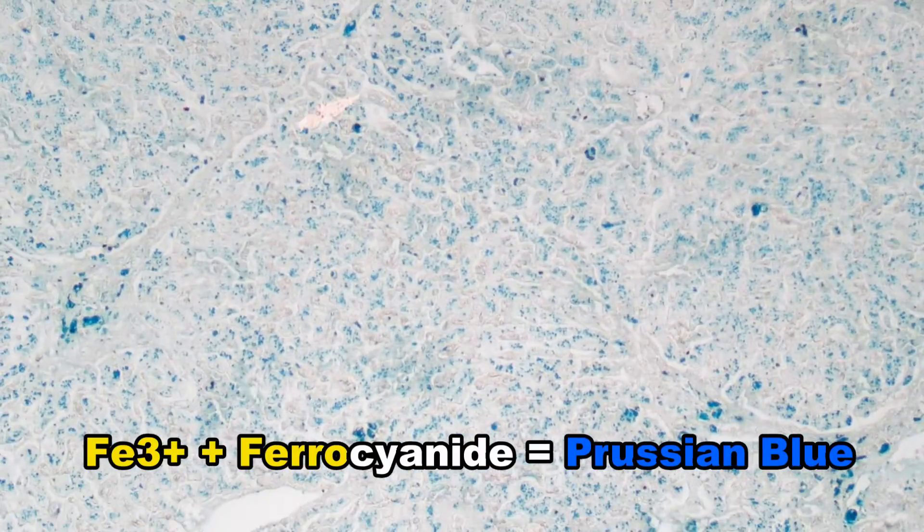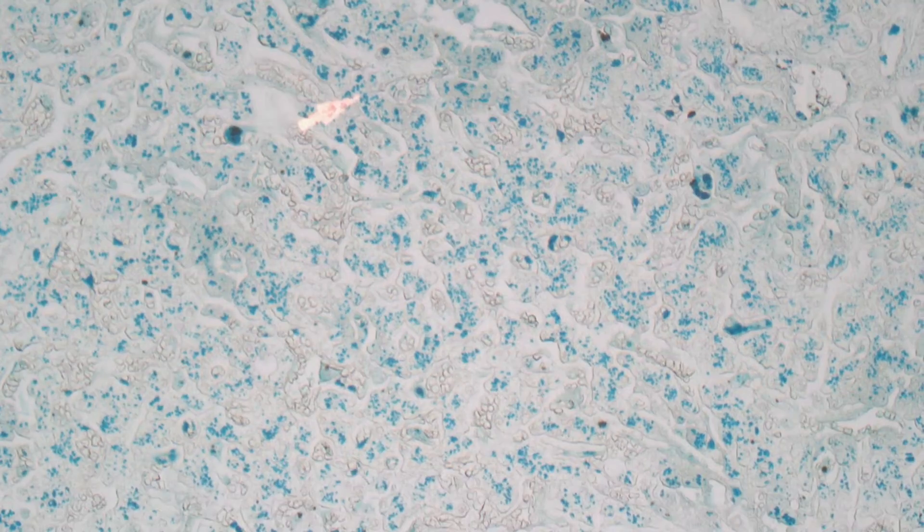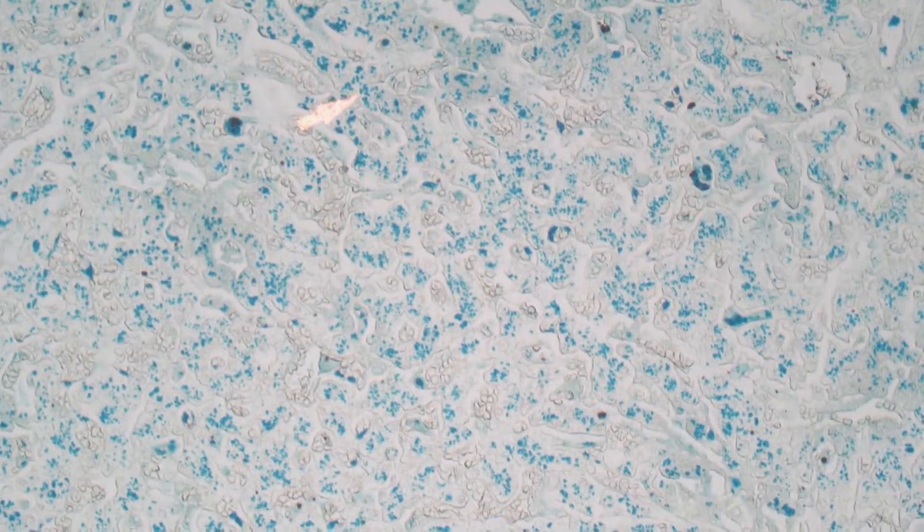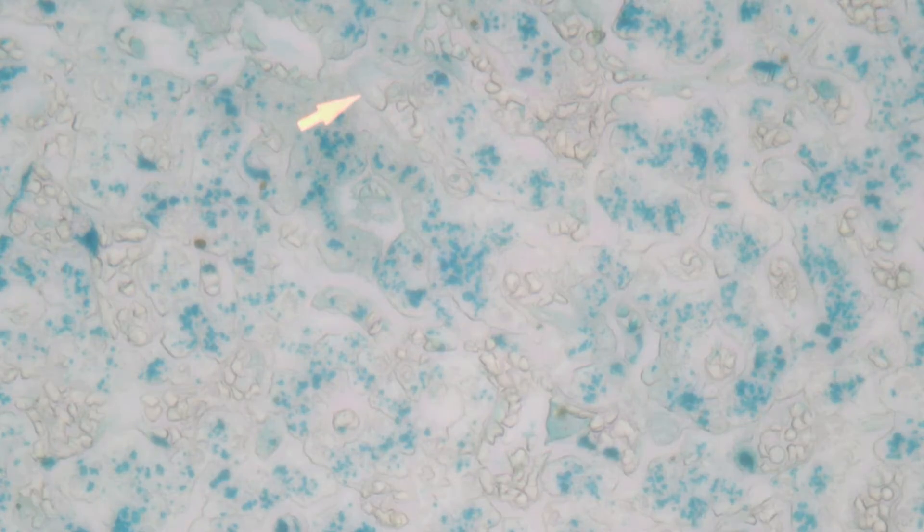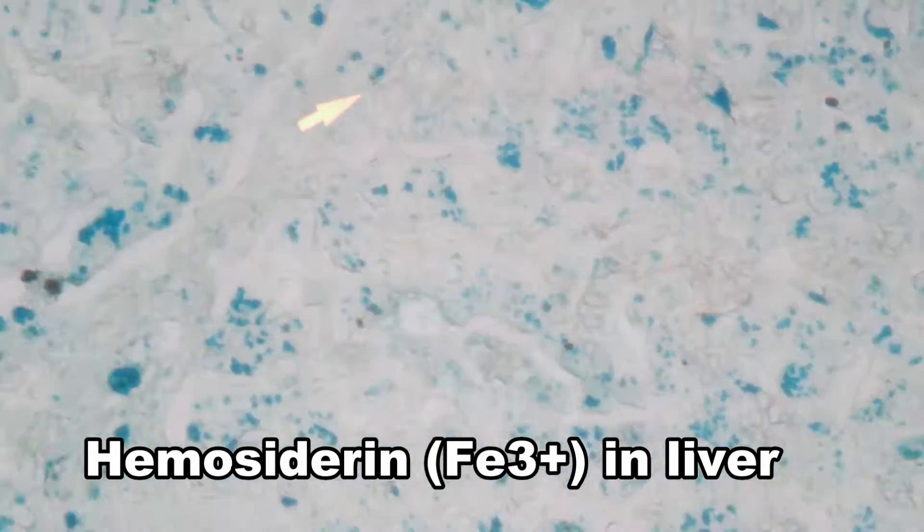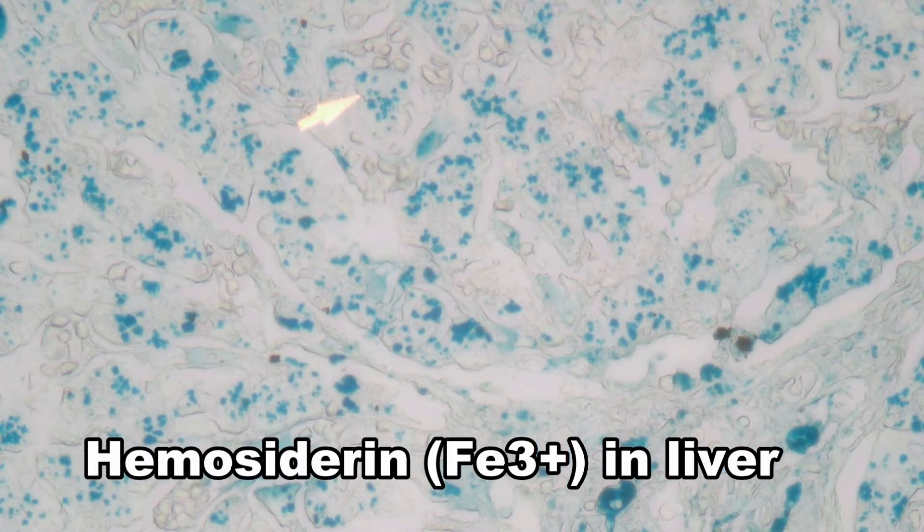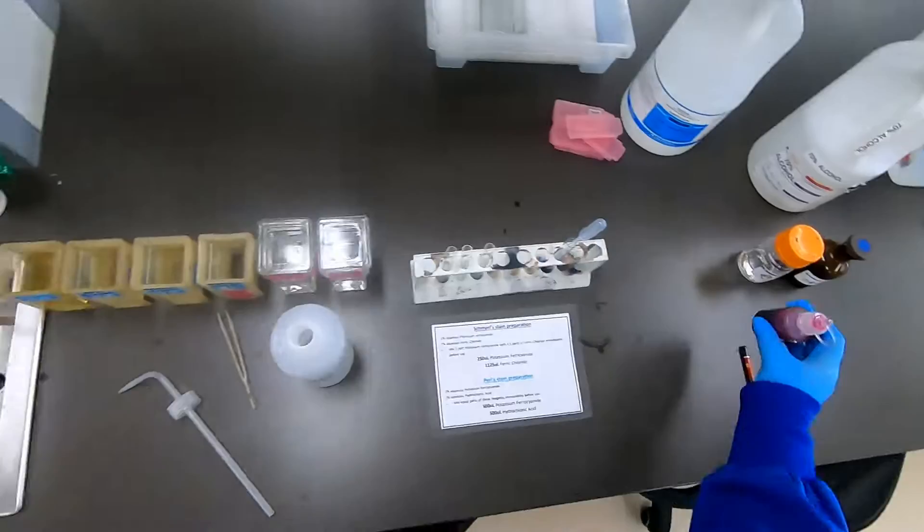What we can see here is that the Fe3+ ions have been released from hemosiderin in this liver by the hydrochloric acid, and then before they can migrate away, they are precipitated in place with the potassium ferrocyanide to form this Pearl's prussian blue. We can see a nice demonstration of those granular deposits.